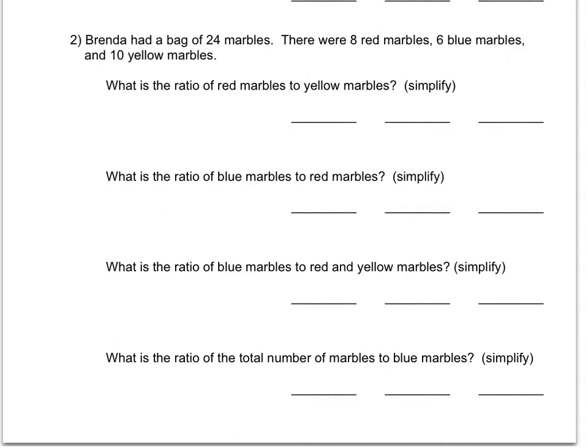Again, write the ratio of blue marbles to red marbles. What's the ratio of blue marbles to red and yellow marbles? You're going to have to add the amount of red marbles to the amount of yellow marbles, and that'll be red and yellow marbles compared to blue marbles. But remember the blue marbles come first. Finally it says what is the ratio of the total number of marbles to blue marbles?